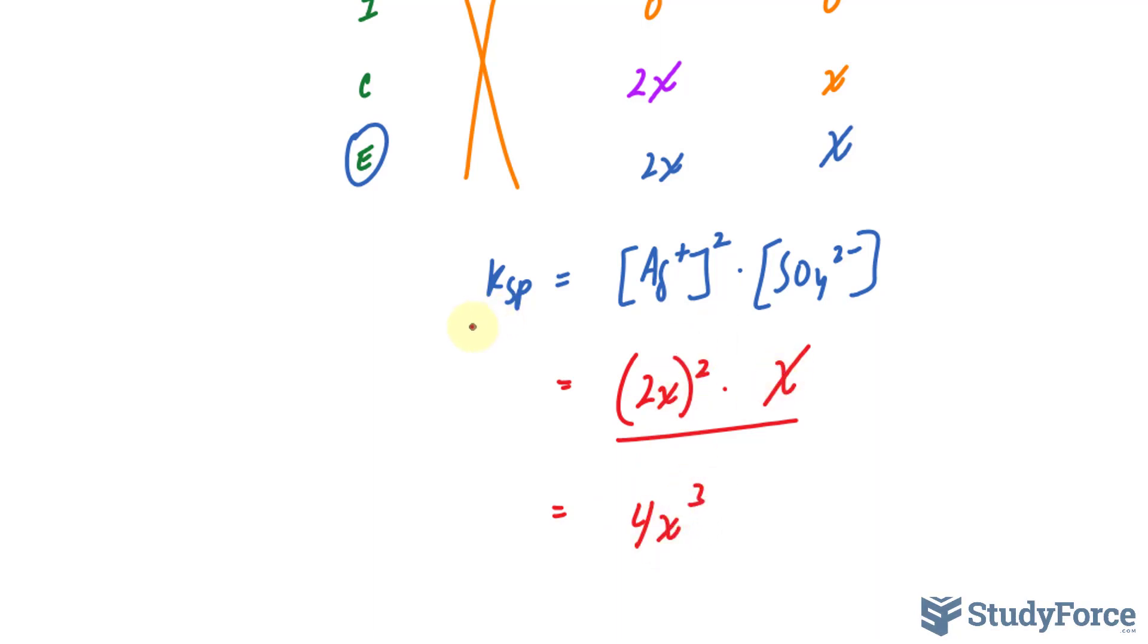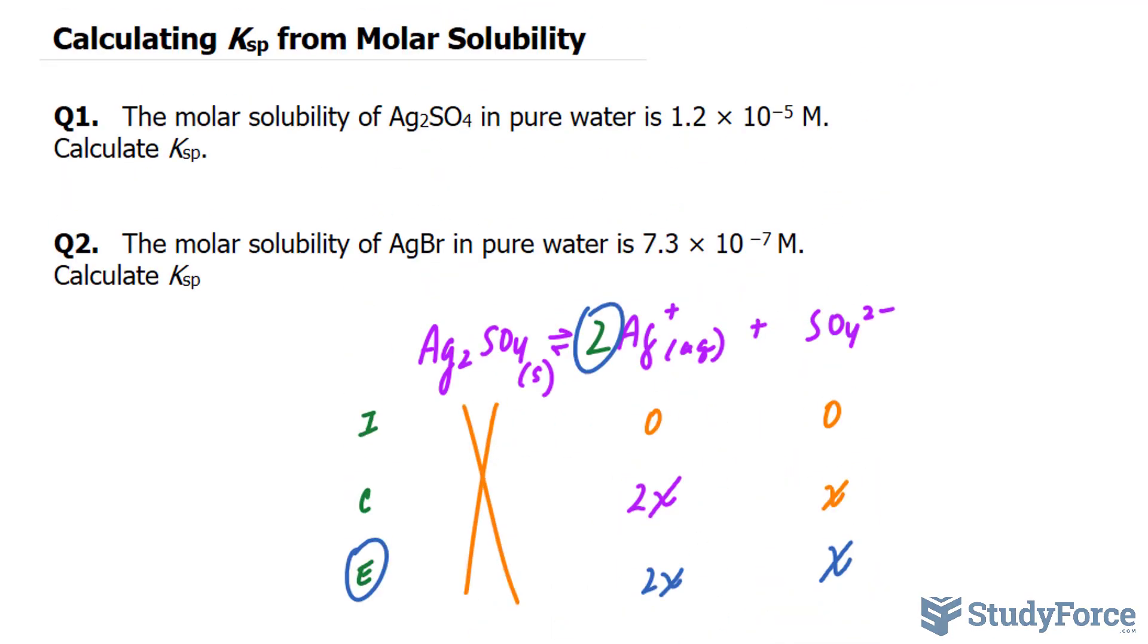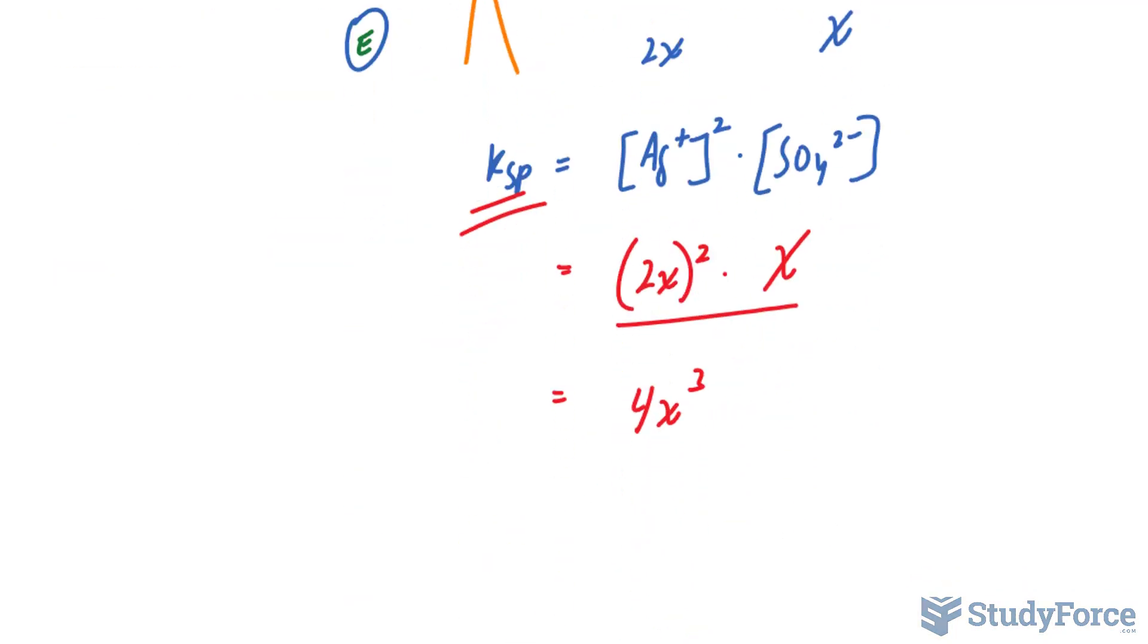Now we're expected, according to the question, to find Ksp when the molarity is 1.2 times 10 to the power of negative 5. At this stage, I'll replace that number, 1.2 times 10 to the power of negative 5 molar, into X, and that way I can find my Ksp.